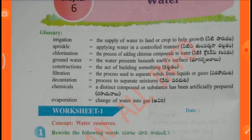Glossary: Irrigation — the supply of water to land or crops to help growth. Sprinkle — applying water in a controlled manner. Chlorination — the process of adding chlorine compounds to water. Groundwater — the water present beneath the earth's surface. Construction — the act of building something.